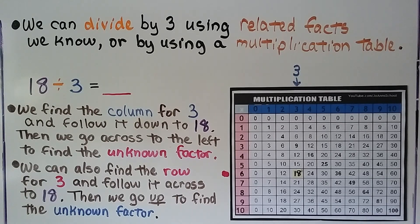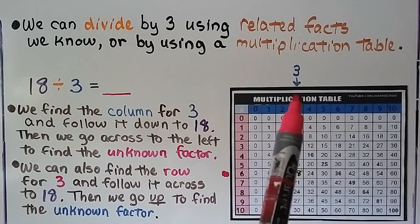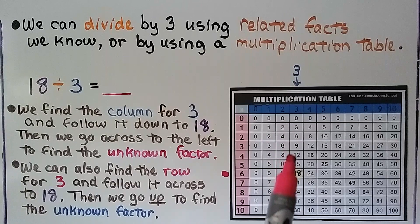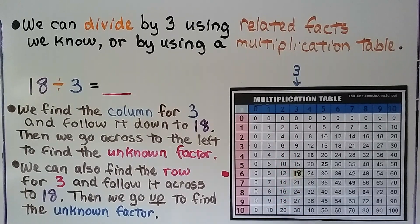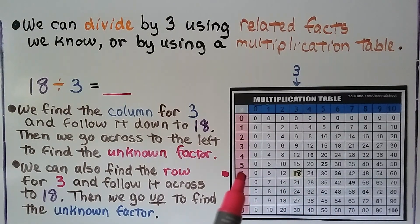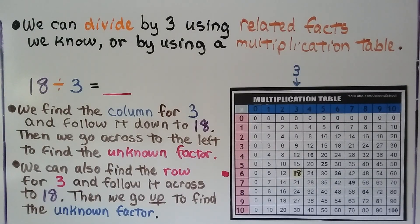We can divide by 3 using related facts that we already know, or by using a multiplication table. Our problem is 18 divided by 3. We find the column for 3, and we follow it down until we see the dividend 18. When we find the 18, we go across to find the unknown factor. It's a 6. So we know 18 divided by 3 is equal to 6.